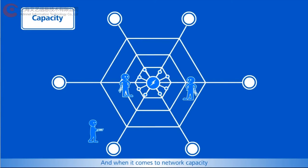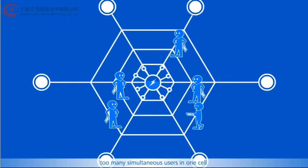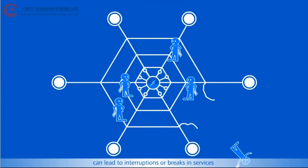And when it comes to network capacity, too many simultaneous users in one cell can lead to interruptions or breaks in services.